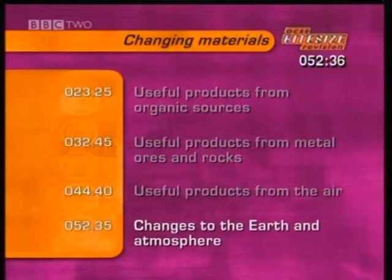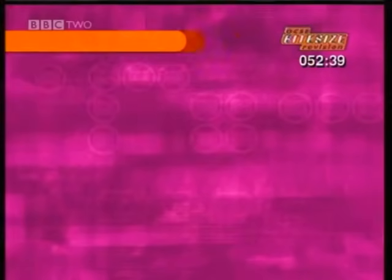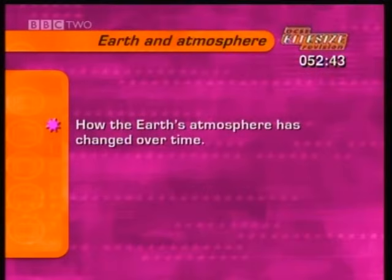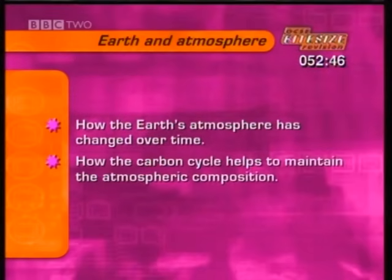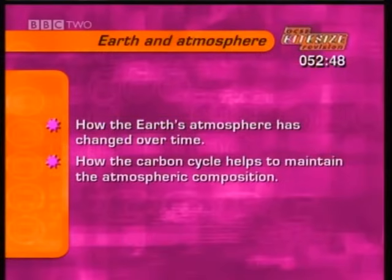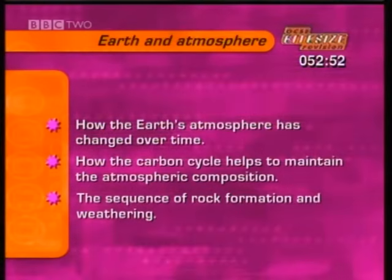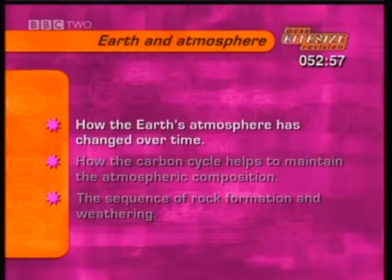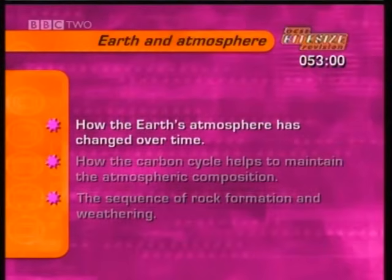This section is about changes to the Earth and atmosphere. It covers how the Earth's atmosphere has changed over time, and how the carbon cycle helps to maintain the atmospheric composition. It also looks at the sequence of rock formation and weathering. Watch the next clip and note down the stages in the evolution of our present-day atmosphere.